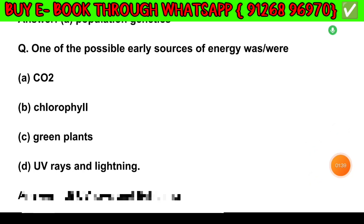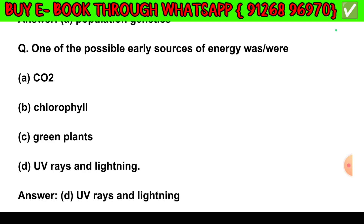Question number 5. One of the possible early sources of energy was or were: Option A — Carbon dioxide. Option B — Chlorophyll. Option C — Green plants. Option D — UV rays and lightning. The answer is Option D: UV rays and lightning.